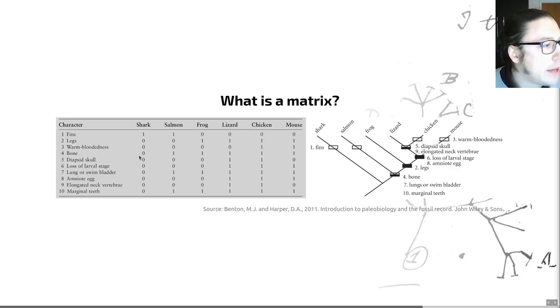In contrast to that, we could, for example, look at the character legs. Now this is a pretty good character because we can see that shark and salmon lack legs, whereas frogs, lizards, chicken, and mice all have legs. And so that's telling us something about the interrelationships between these groups. There's a shared character here between shark and salmon, the lack of legs, and a shared one here between these four taxa there. So this is an example of a good character that's telling us something about the interrelationships of these groups here.